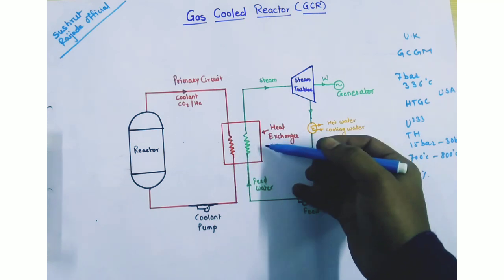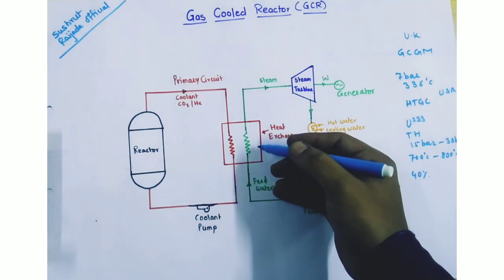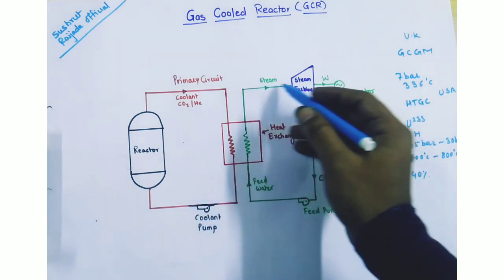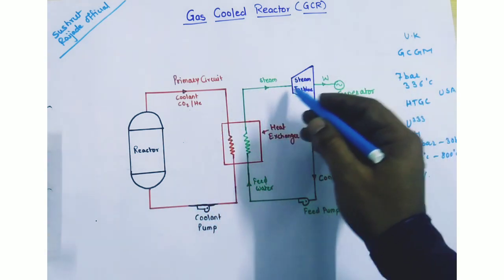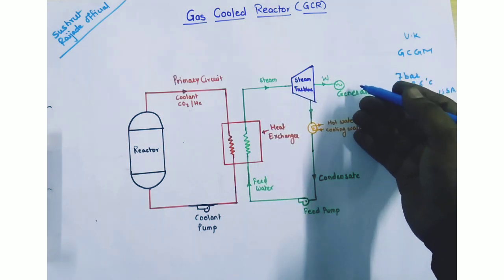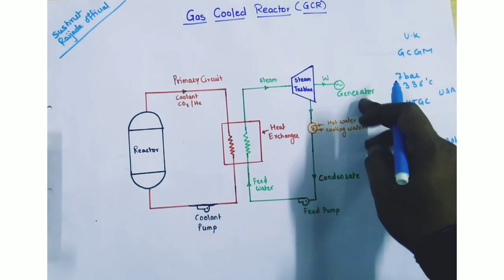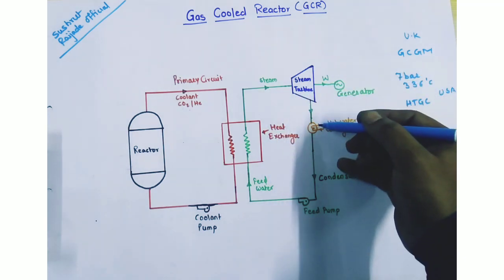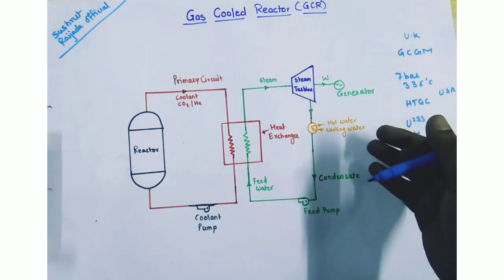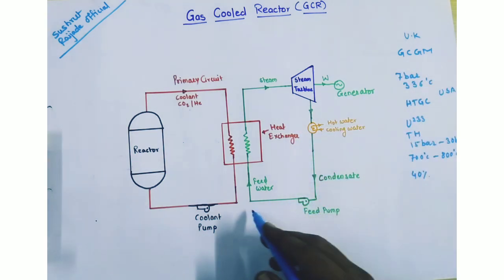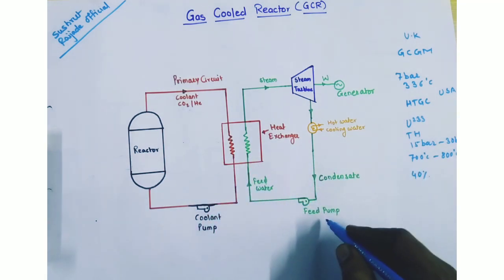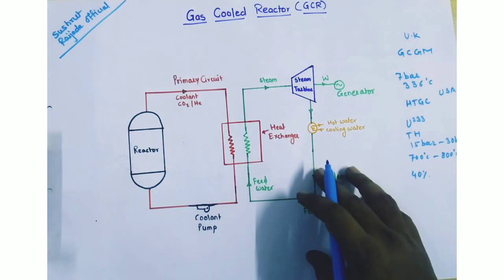The heat carried by the coolant in the heat exchanger causes the water to be converted into steam. That steam flows through the steam turbine, producing electricity with the help of a generator. The exhaust steam from the turbine passes through the condenser, gets condensed, and that condensate passes back towards the heat exchanger with the help of a feed pump.